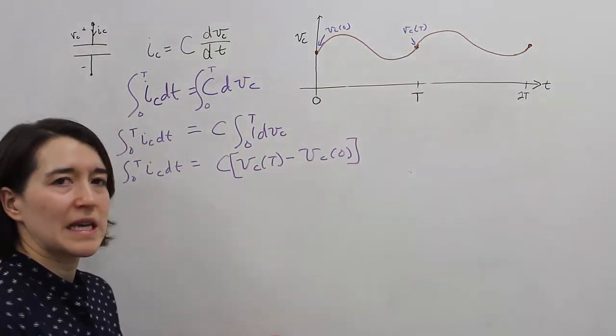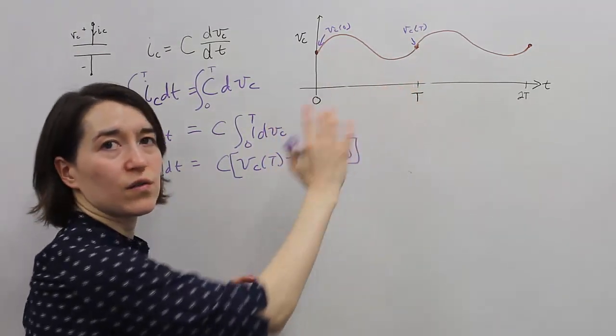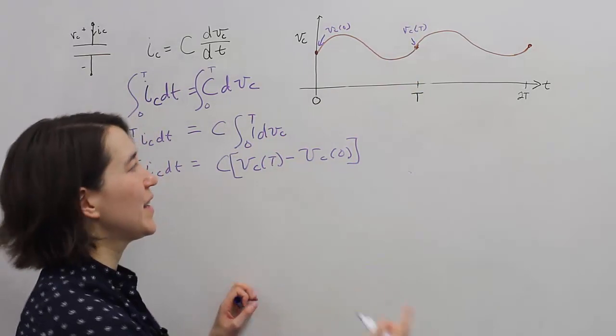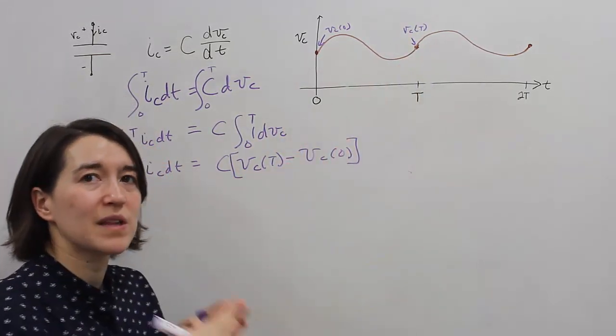If this system is in average steady state, meaning that the average value over a period is not changing, it means that from the starting point to the end point, those have to be the same values.